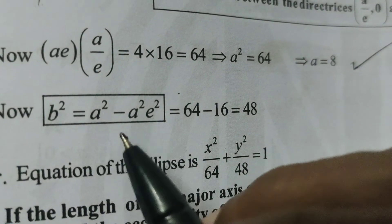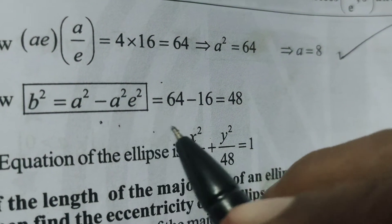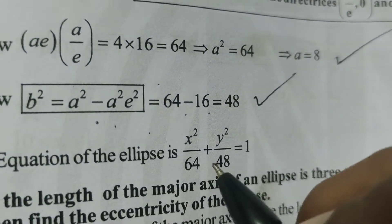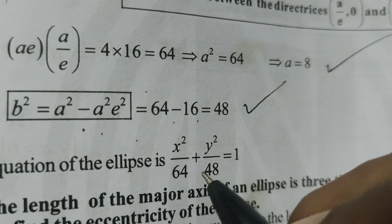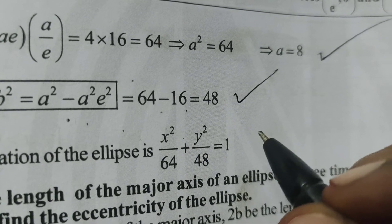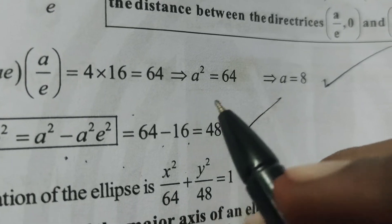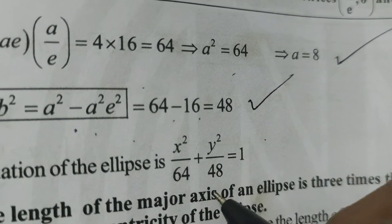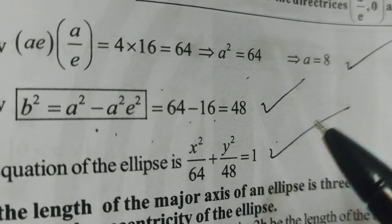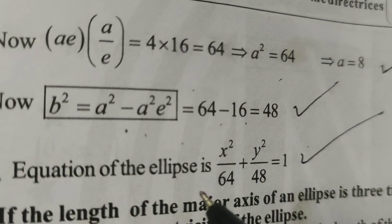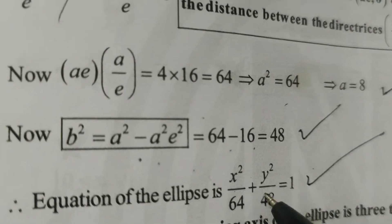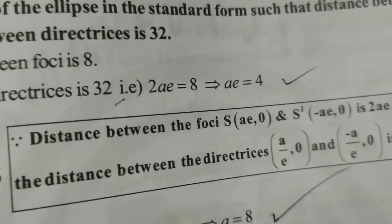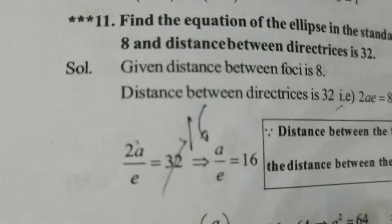Now, B² equals A² minus A²E², which is 64 minus 16, that is 48. The equation of the ellipse is x²/a² + y²/b² = 1, which gives x²/64 + y²/48 = 1. This is the required equation of the ellipse given directrices distance is 32 and foci distance is 8. Thank you.